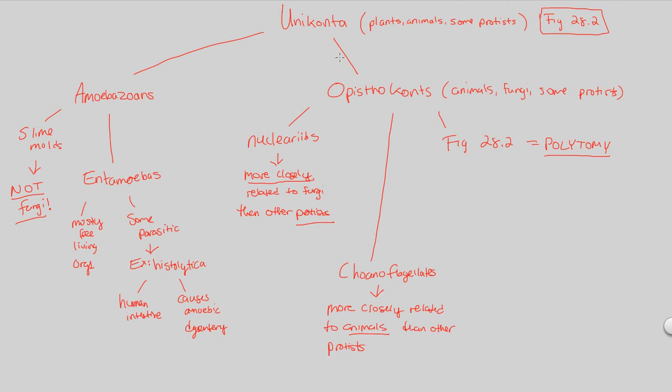So, we have amoebozoans, we have opisthokonts, we have unikonts. Now, that's it for protists. Word of advice, lots of information. I absolutely understand that because there's lots of information. There's a lot of memorization in this lecture, and that is difficult for a lot of students. But, in order for me to at least hopefully motivate you to memorize these things, to understand, more importantly, these protists,